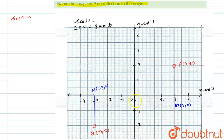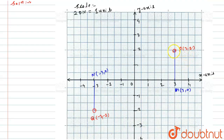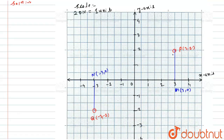Now the next thing we have to do here is name the image of P on reflection in the origin. So point P has coordinates (3, 2), while point Q has coordinates (-3, -2). The image of P on reflection in the origin is nothing but point Q with coordinates (-3, -2).